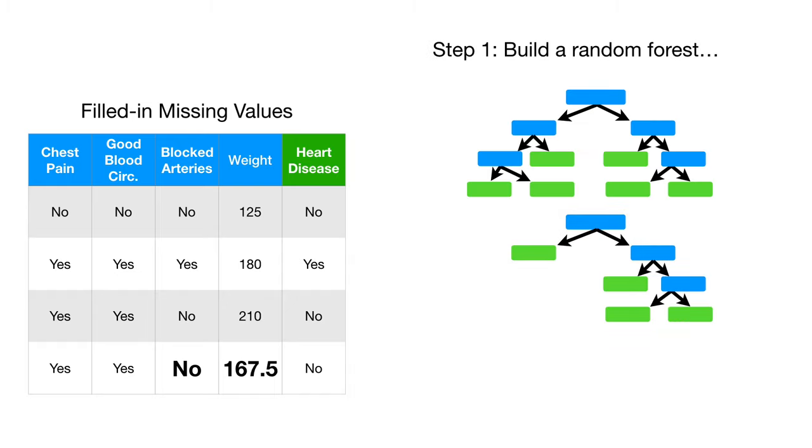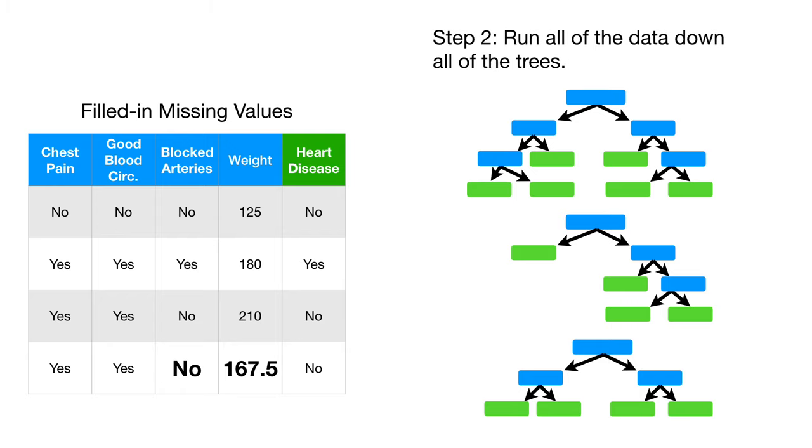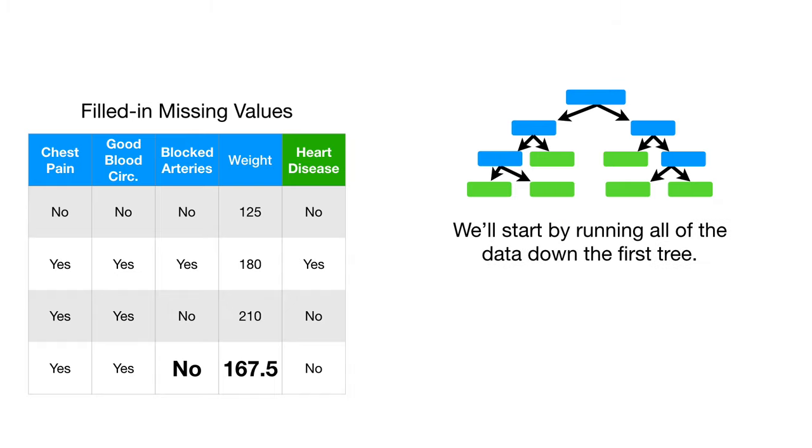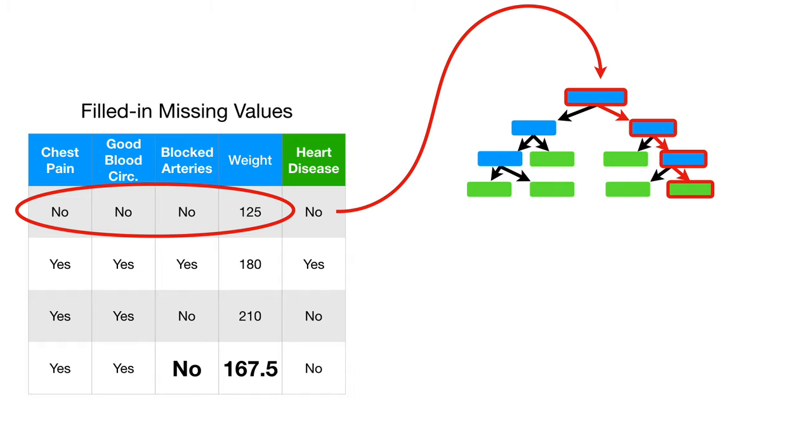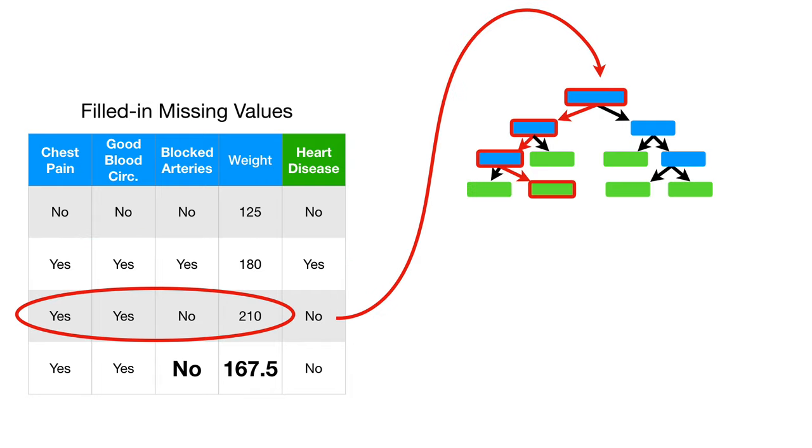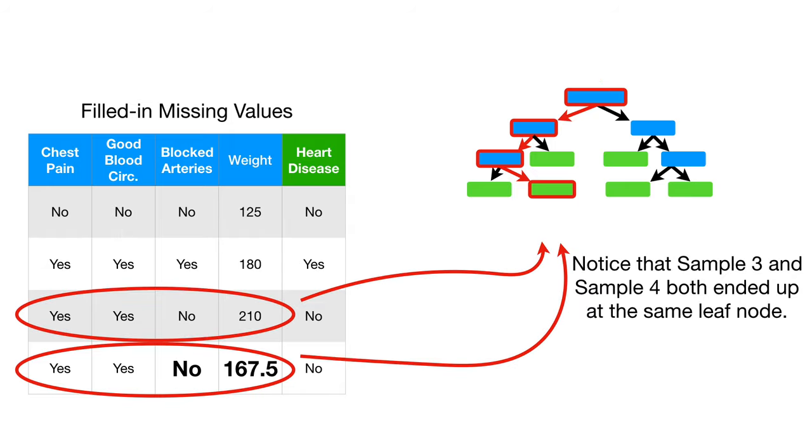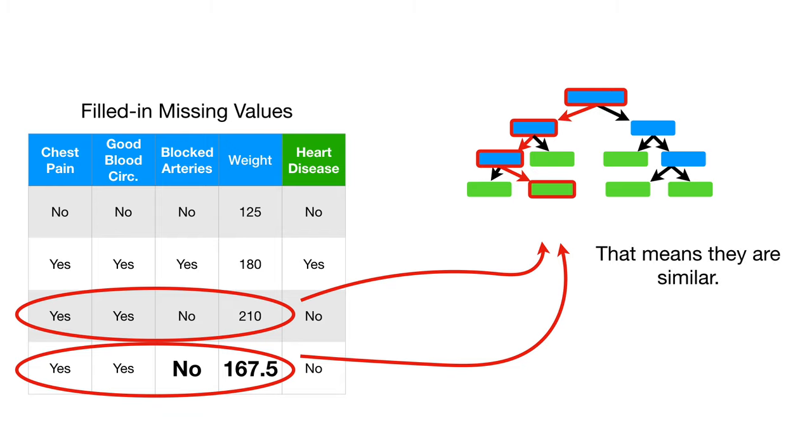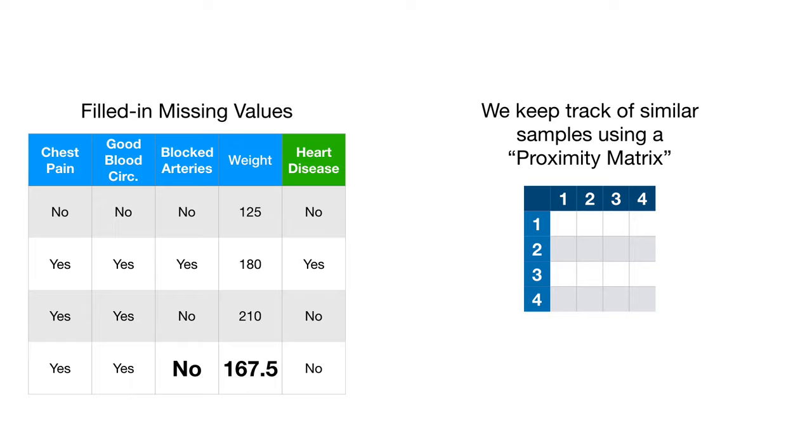Step one, build a random forest. Step two, run all of the data down all of the trees. We'll start by running all of the data down the first tree. Notice that sample three and sample four both ended up at the same leaf node. That means they're similar. At least, that's how similarity is defined in random forests.